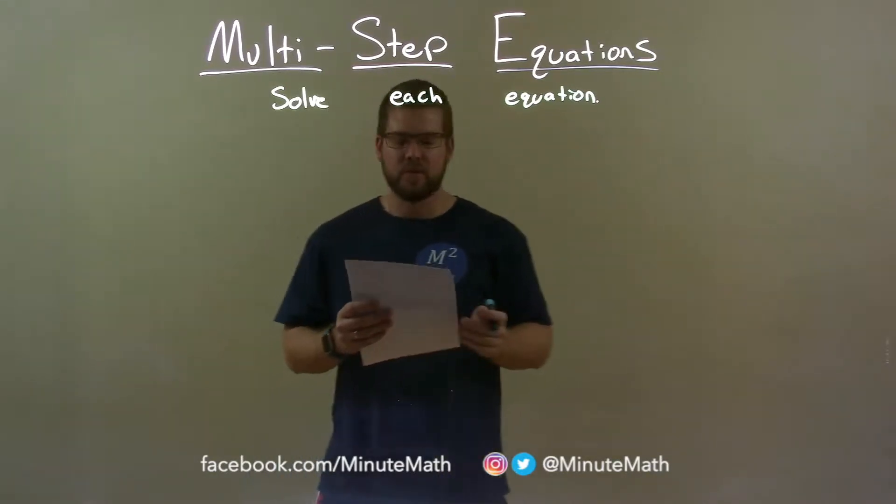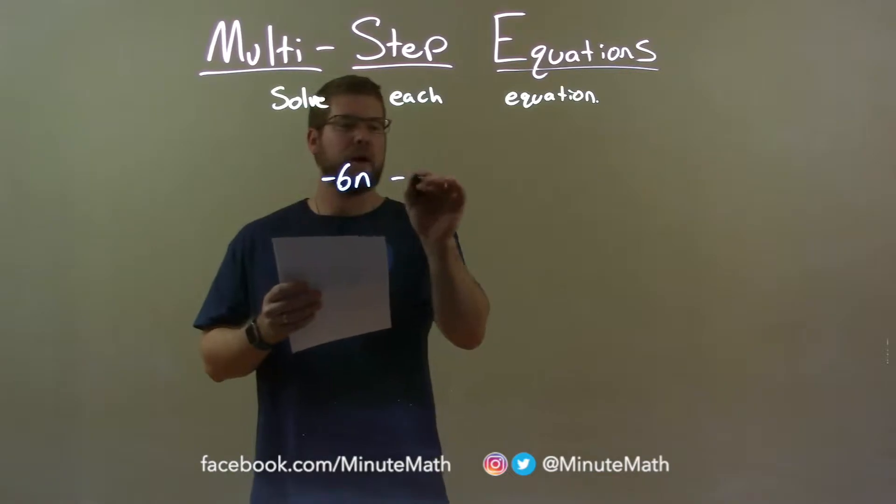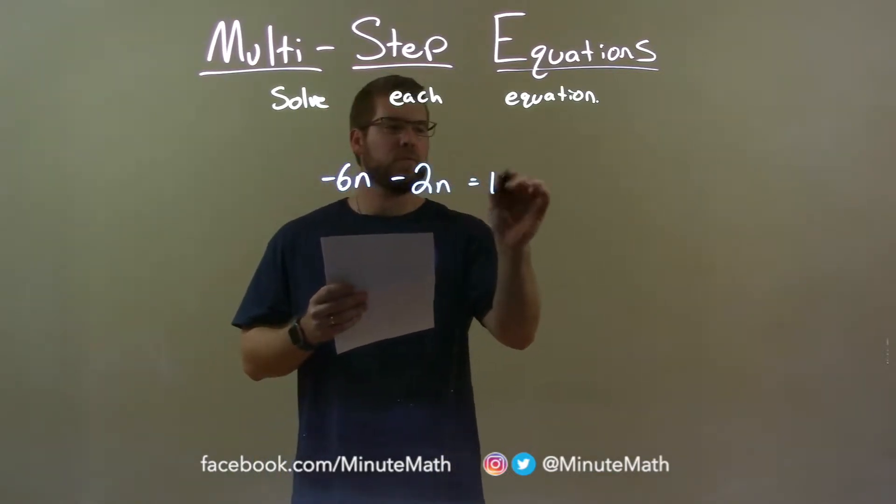Now, if I was given this equation, negative 6n minus 2n equals 16.